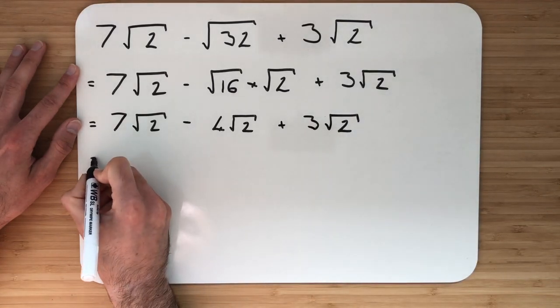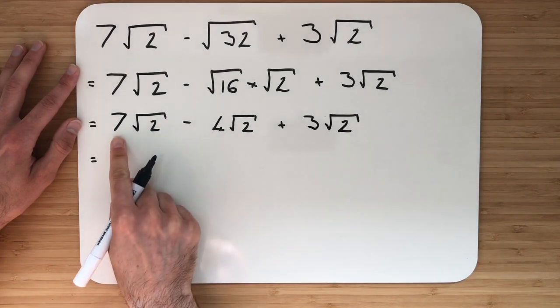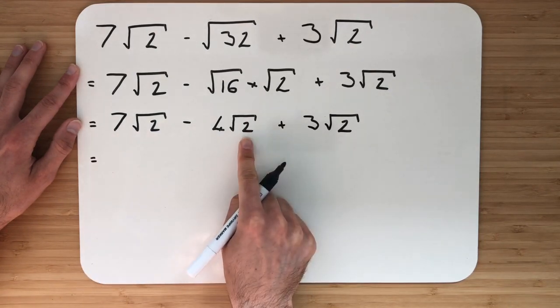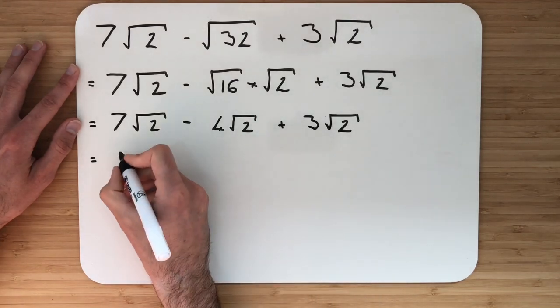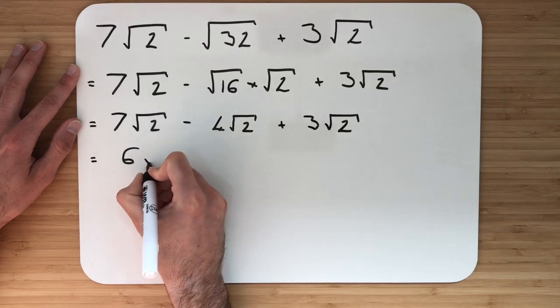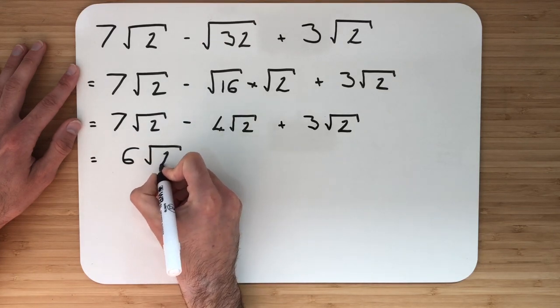From there, let's simplify down. 7√2 subtract 4√2. Well, that leaves me with 3√2. Then I'm going to give you another 3√2. So the final answer is 6√2.